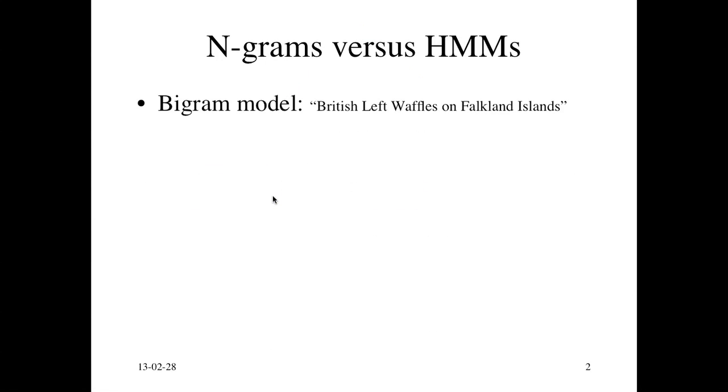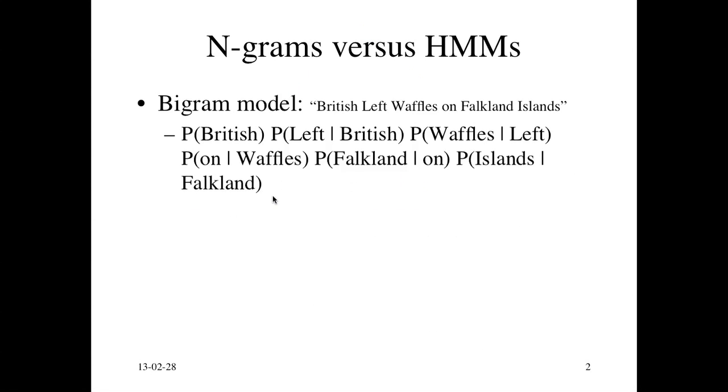So if you look at n-gram models, let's just take a bigram model to keep things simple, and you have an input sentence, British Left Waffles on Falkland Islands, you would score or give a probability to this sentence using a bigram model in this way. So you would first compute the probability of British and then the second word left given British and so on. So that's the standard Markov assumption that we only look at a finite history, in this case the previous word.